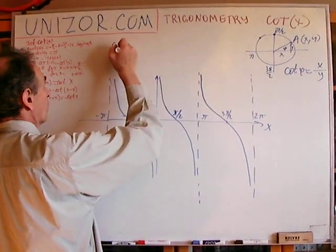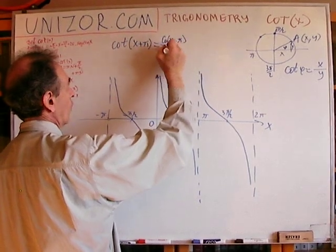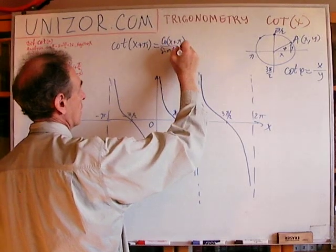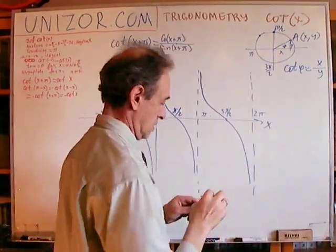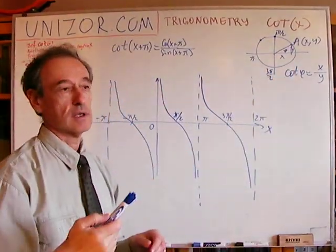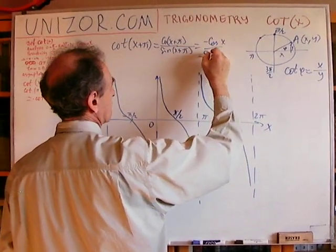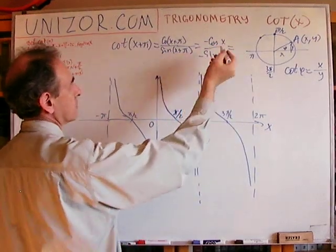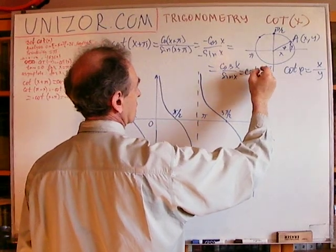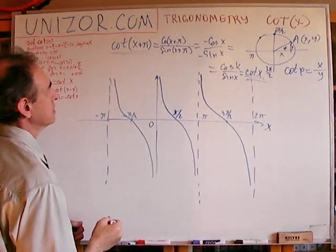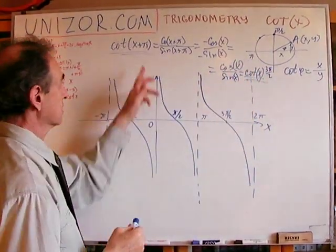Well, we can actually prove it because cotangent of x plus π is equal to cosine of x plus π over sine of x plus π. Now, what happens with sine and cosine if we are adding π to the angle? So, from this position, it goes to this position. Both ordinate and abscissa retain their absolute value but change the sign. So, basically, this is minus cosine of x divided by minus sine of x, which is, again, negative over negative. It's the same thing as cosine x over sine x, which is cotangent of x. So, cotangent x and cotangent of x plus π are exactly the same, which means that π is a period.